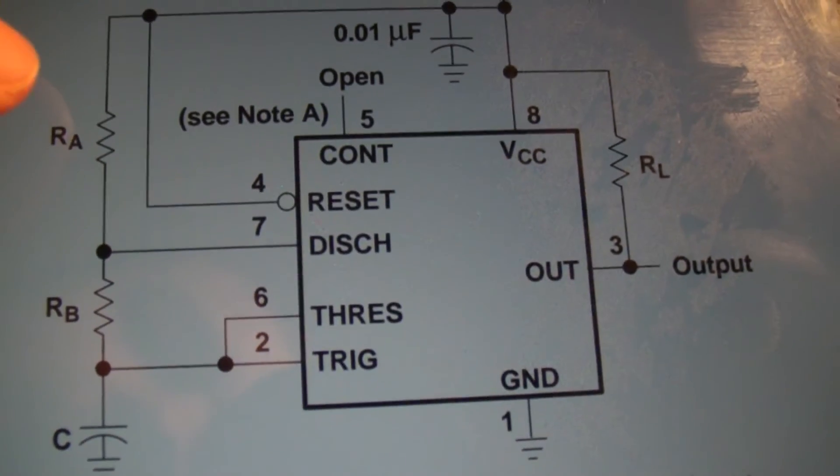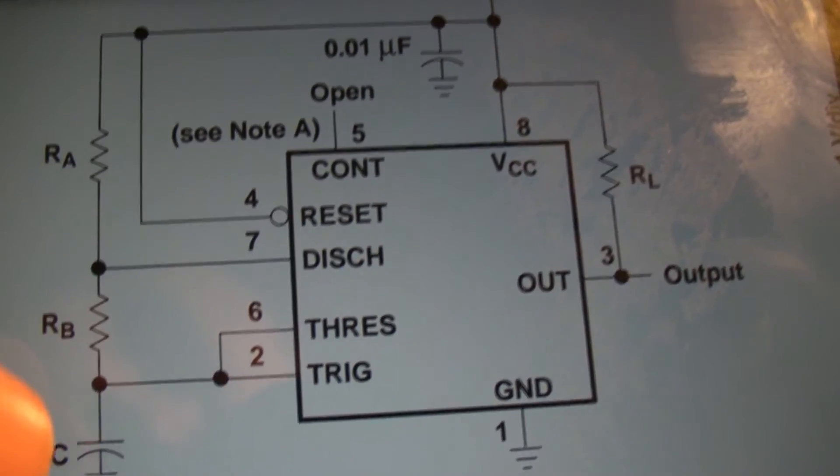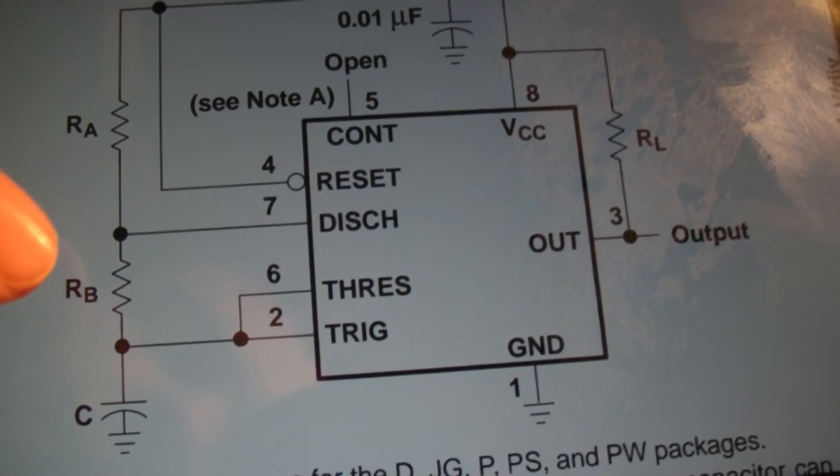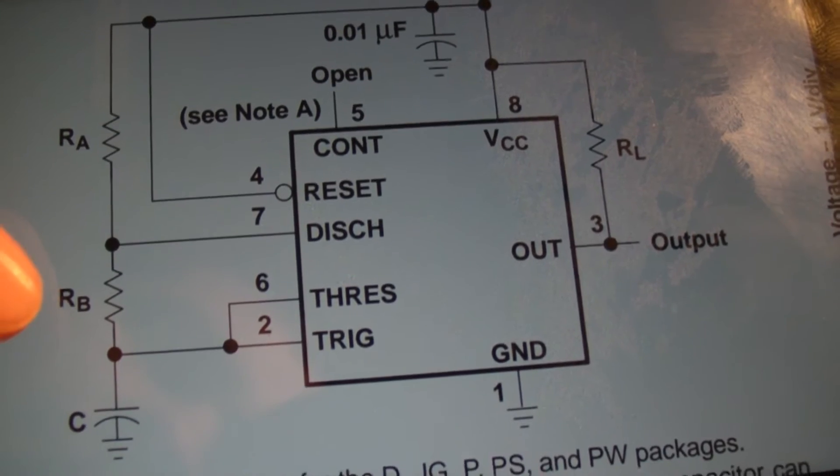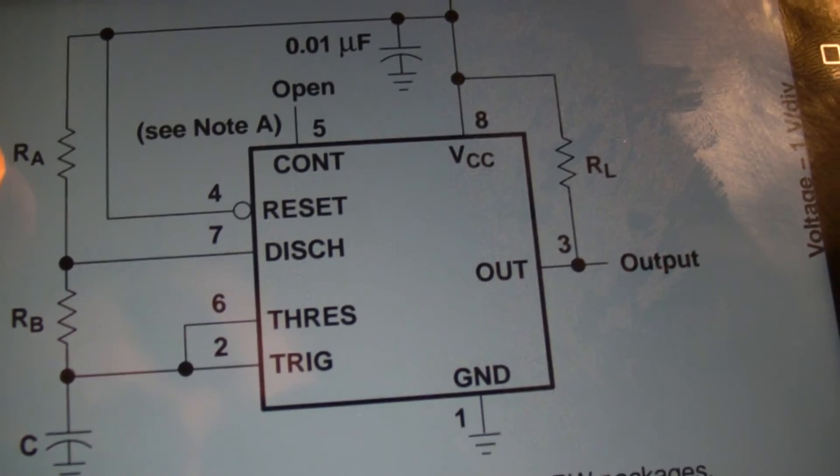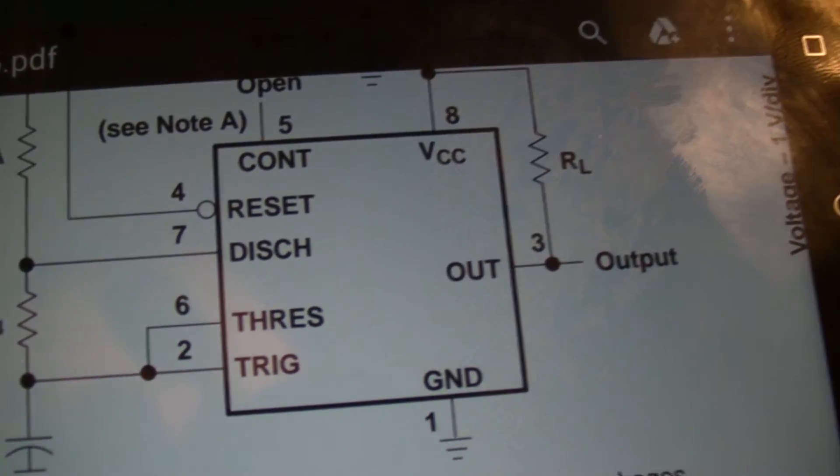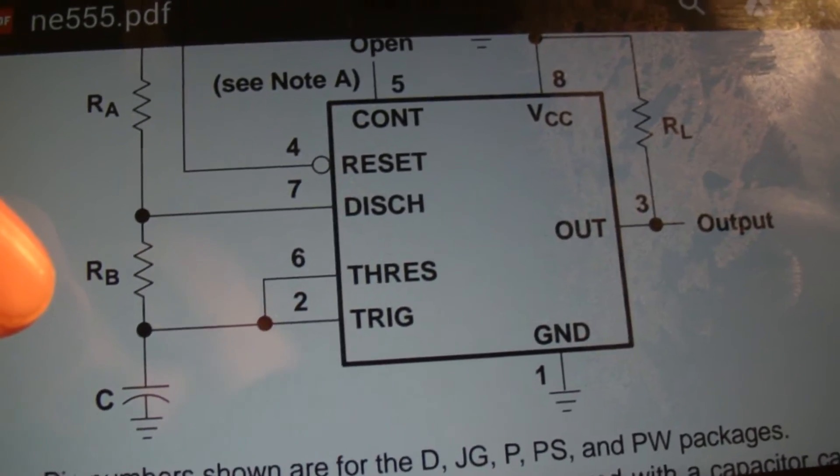When the capacitor is filling up, the electrical conductivity needs to pass through RA and RB in order to fill the capacitor. In order to discharge, it will go through this resistor B. So the combination of resistor A, resistor B, and capacitor values will determine the actual timing of the device.